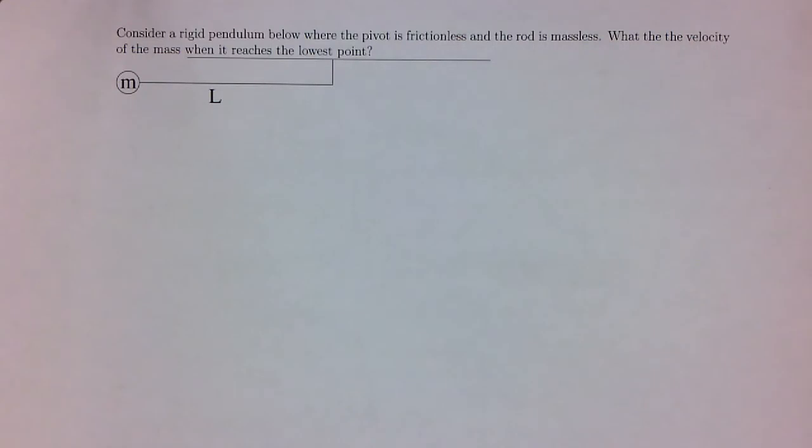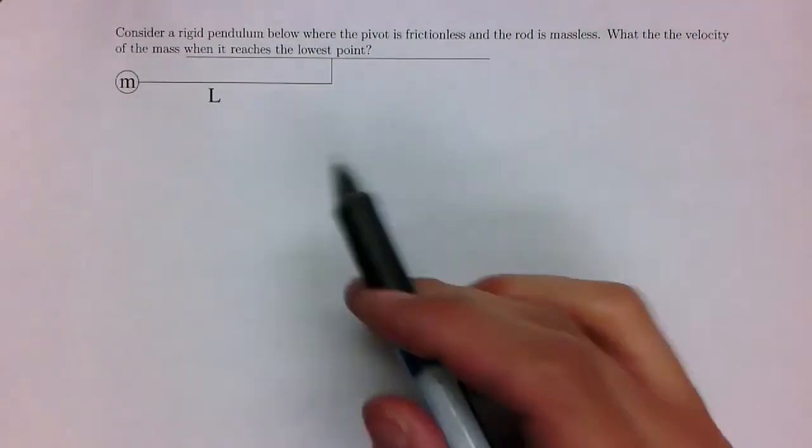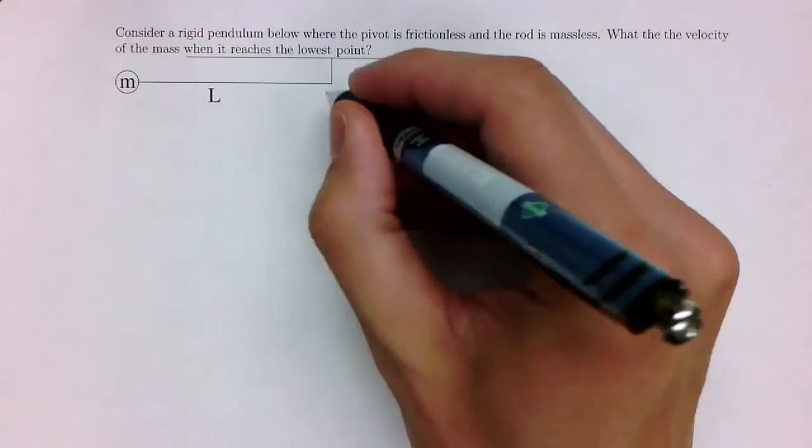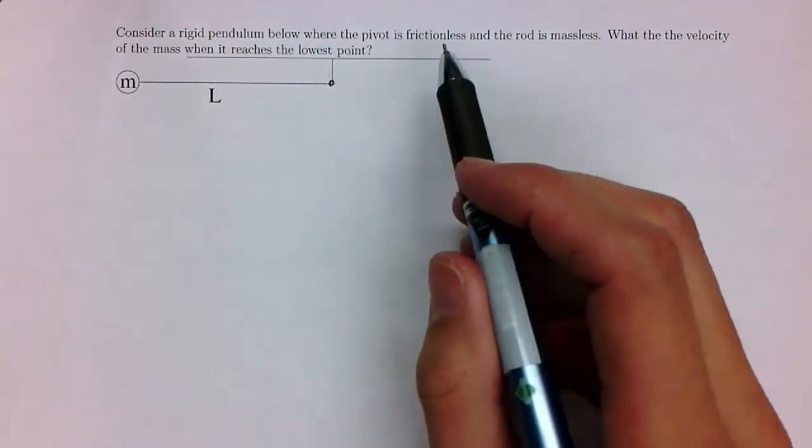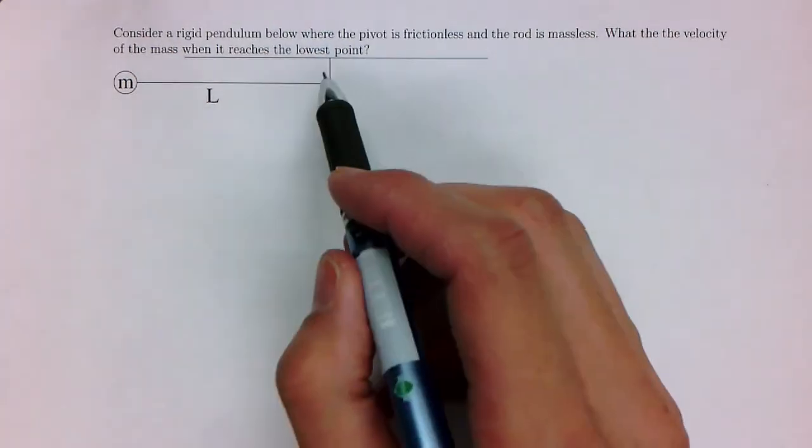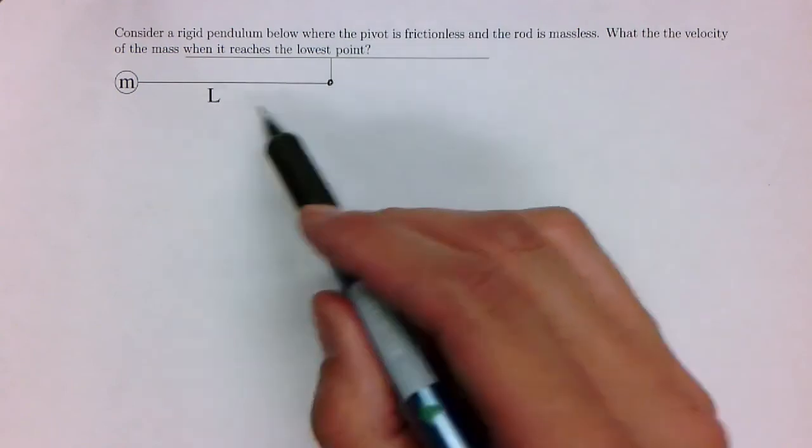This following example is also about conservation of energy. Consider a rigid pendulum where the pivot is frictionless. There's a pivot right here. Frictionless and the rod is massless. That's the rod, it's massless. What's the velocity of the mass when it reaches the lowest point?